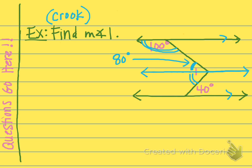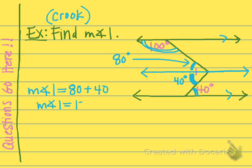Now look at the bottom part of angle 1, below the auxiliary line. The 40-degree angle is alternate interior with that bottom part of angle 1, which means they are congruent. So the bottom part of angle 1 also has a measure of 40 degrees. To get the total measure of angle 1, add the top and the bottom together: 80 + 40 = 120 degrees.